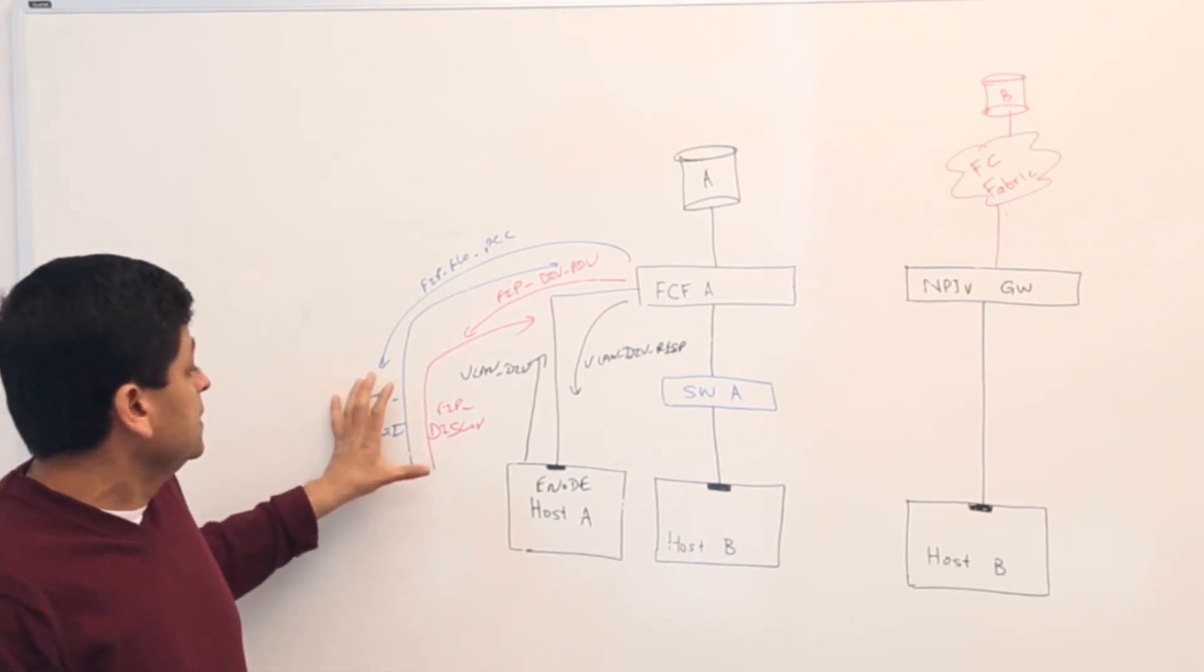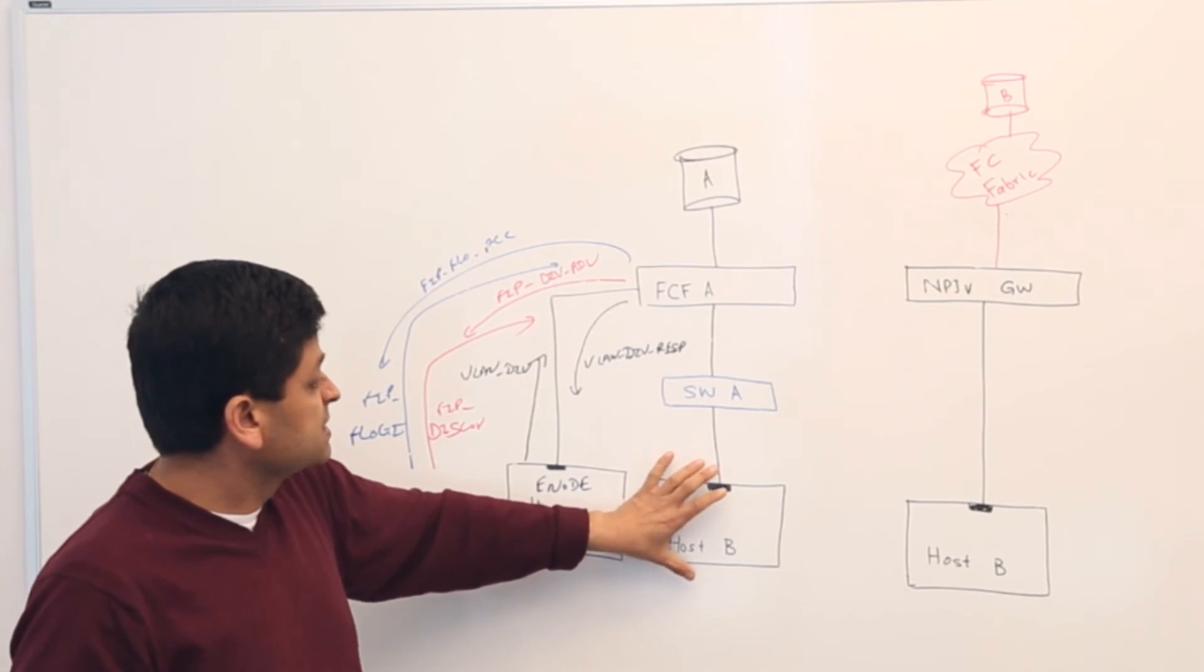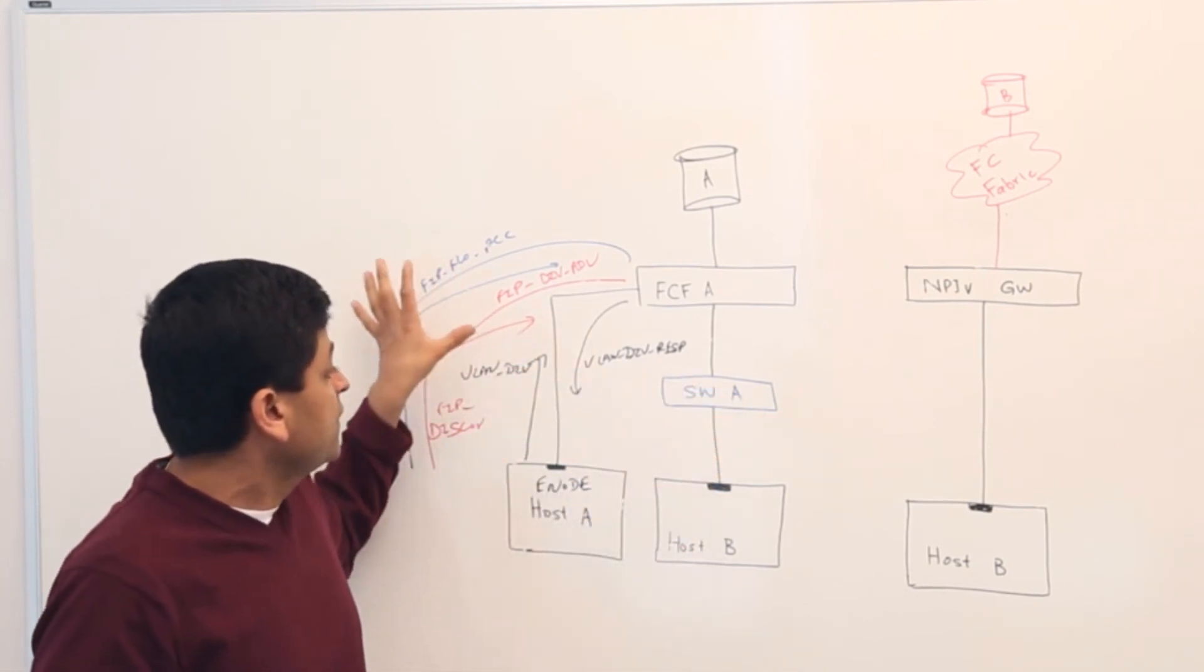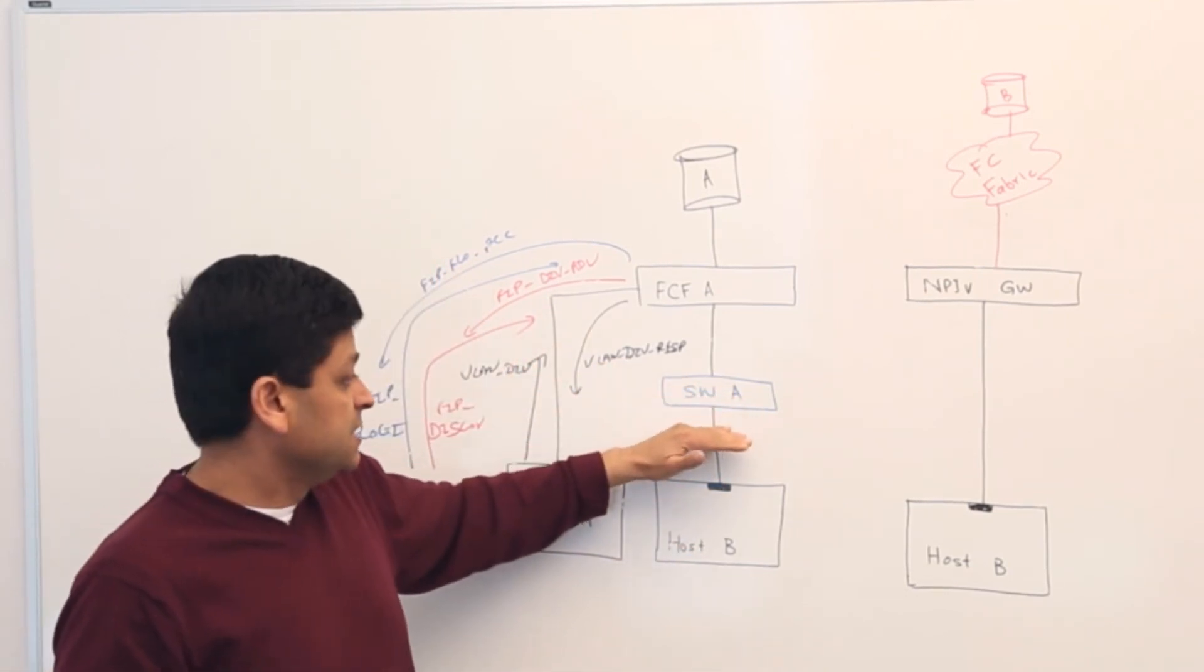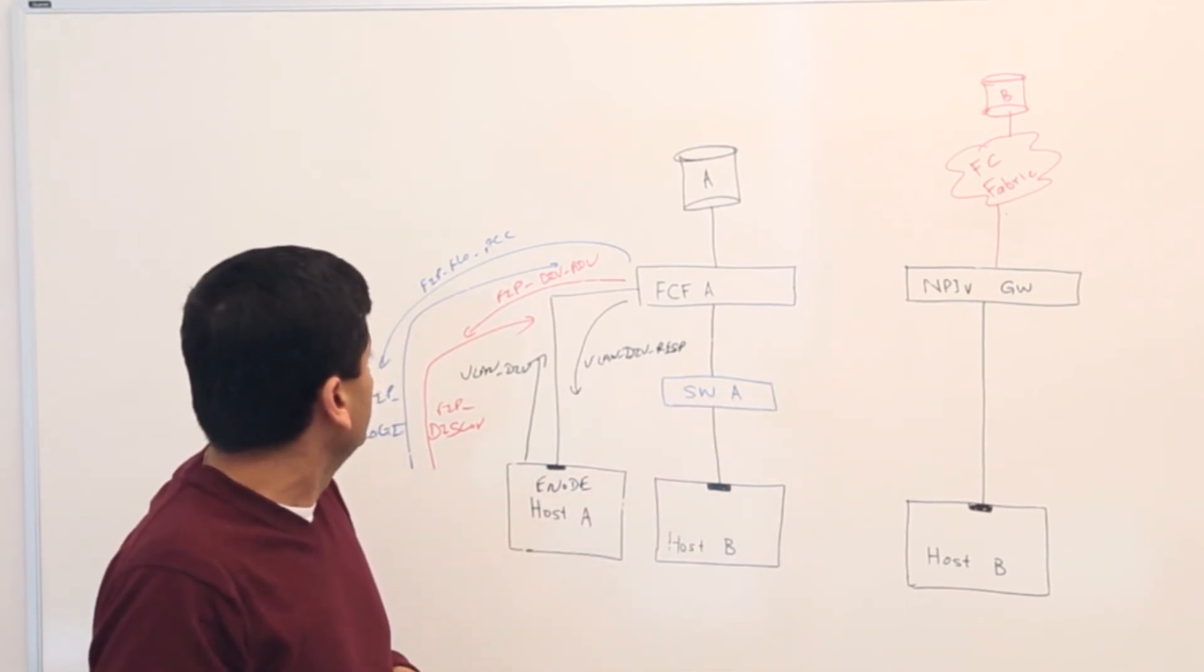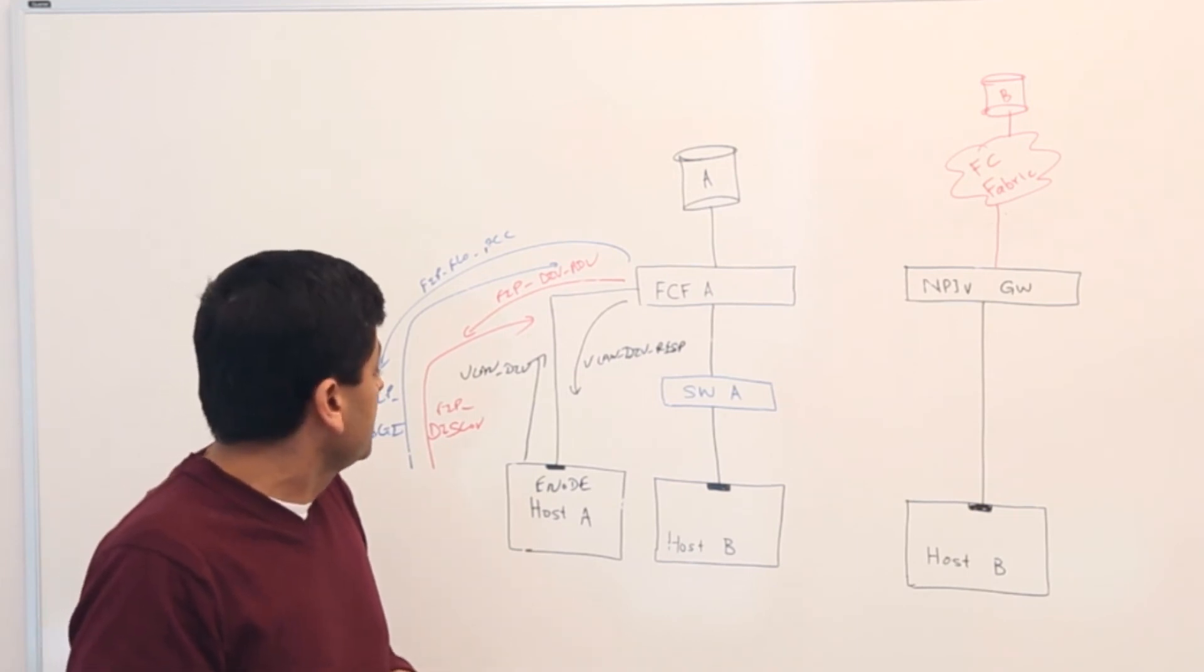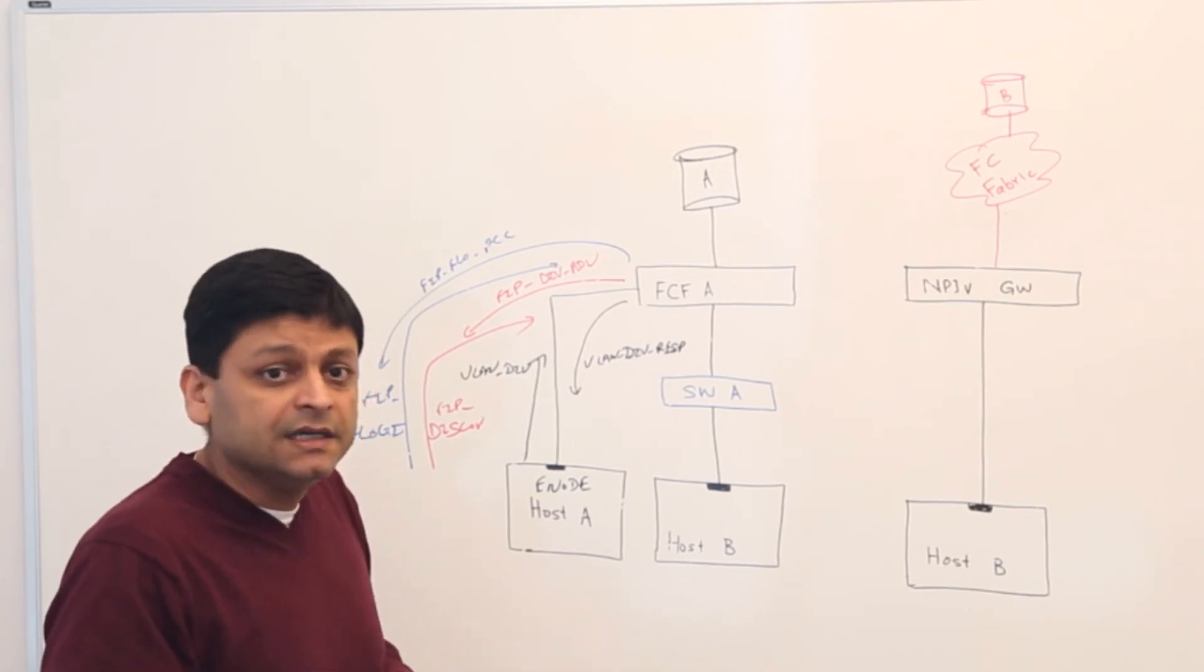As you can see this is a host directly connected here. Here it will be the same thing where all these frames will be sent except there is a switch in the middle. So this would be the FIP discovery in FCoE.